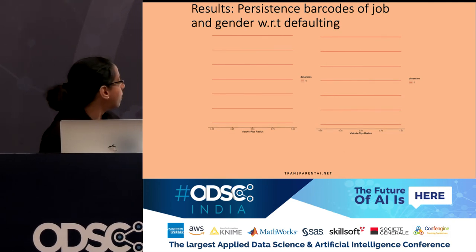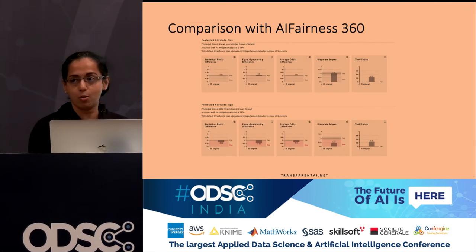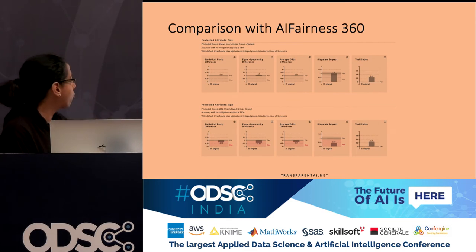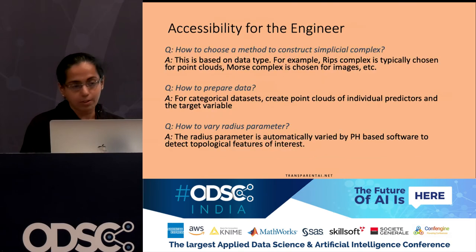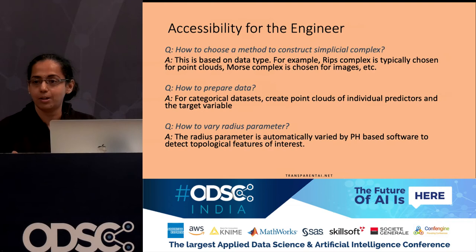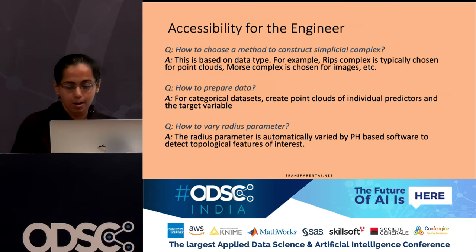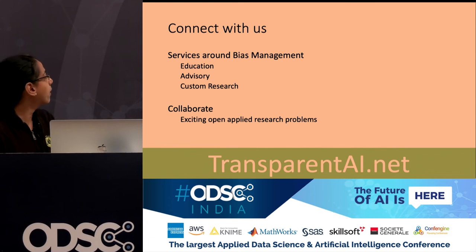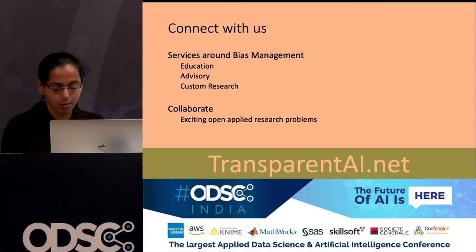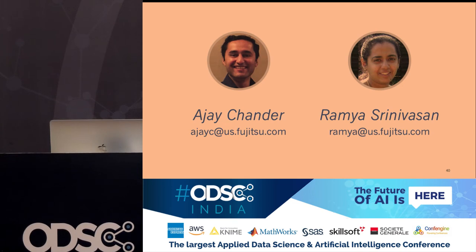If you look at gender or job, the bar codes are more or less uniform — no bias indicated in the data set for those attributes. We can validate it with AI Fairness 360, the open source tool from IBM, which also validates our results. With that, I think I'm running out of time — we'll be happy to take questions. Please feel free to write to us at the contact information shown if you'd like to connect or collaborate.